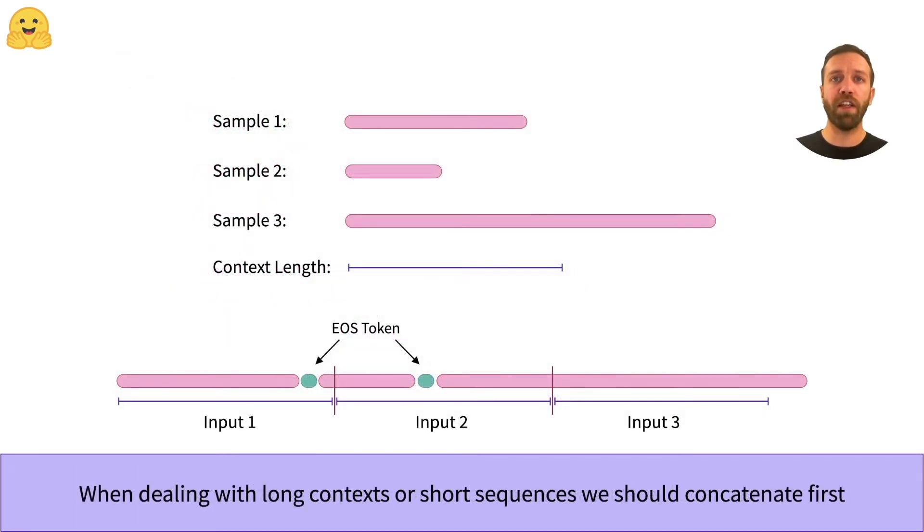If the context length is similar to the file lengths, this approach doesn't work as well. In this example, both sample one and two are shorter than the context size and would be discarded with the previous approach.